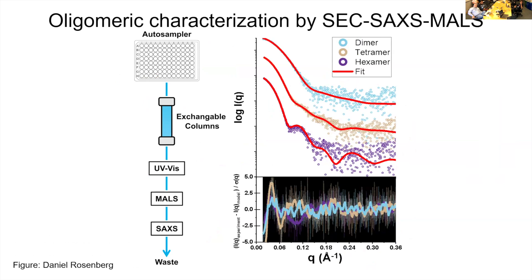For oligomeric state characterization, we use the SEC-SAXS-MALS pipeline here at the beamline. As an example of the output data for RuBisCO, we have the scattering profile shown in color as well as our theoretical fit in red.